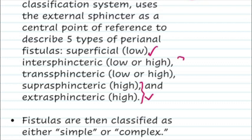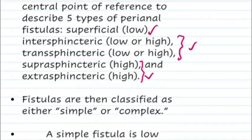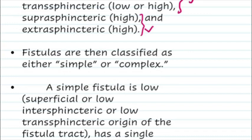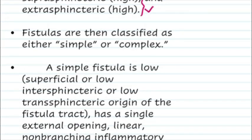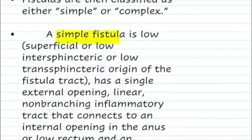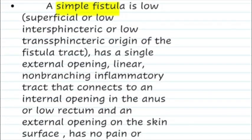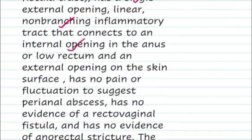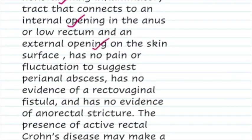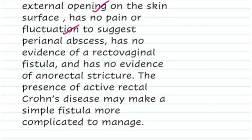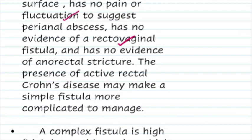Another concept is whether the fistula is simple or complex. A simple fistula is a low fistula — it can be low superficial, low intersphincteric, or low transsphincteric — with a single external opening, non-branching, with the internal opening in the anus or lower rectum, external opening on the skin, no pain or fluctuation, no evidence of rectovaginal fistula, and no evidence of any stricture.